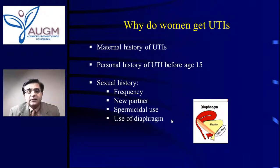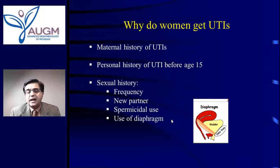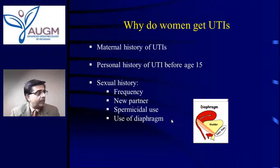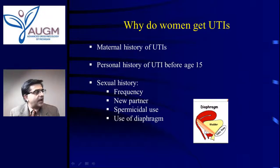Other factors include a mother having a history of urinary tract infections, which somehow predisposes daughters to bladder infections as well. And if the patient herself had a bladder infection at an early age, that suggests she may have frequent bladder infections later in life — pointing to an immune system that may be slightly deficient. Sexual history also matters: increased frequency, a new partner, and use of a diaphragm with spermicidal jelly can increase the risk of bladder infections.